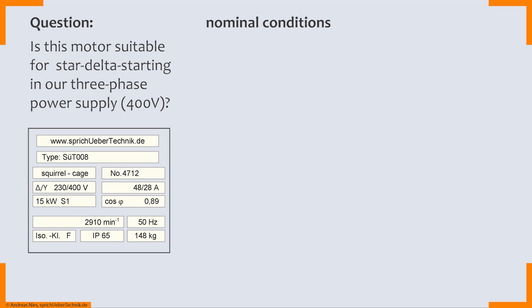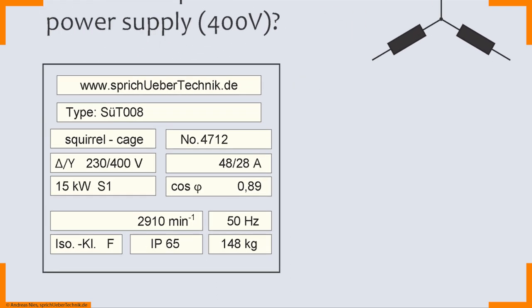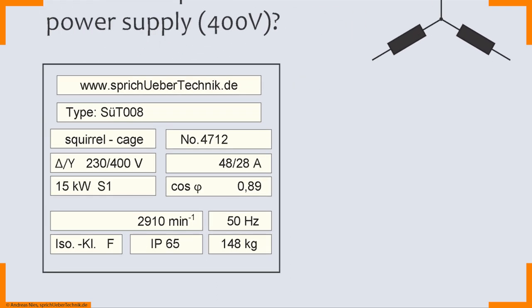What are the nominal conditions for star connection? Do you find them? I give you a second to consider. Which of the numbers belong to star connection? The right answer? It's those two here. 400 volts and 28 amperes. These two belong to star connection.